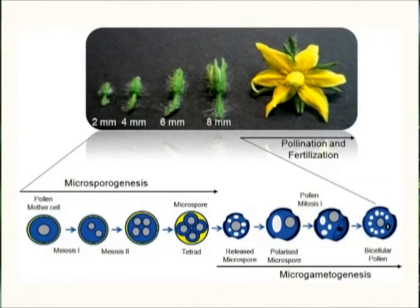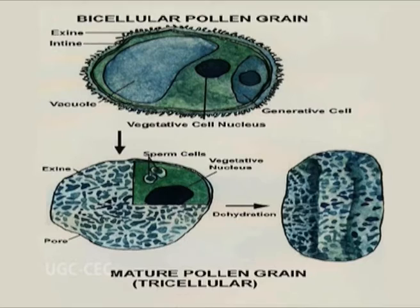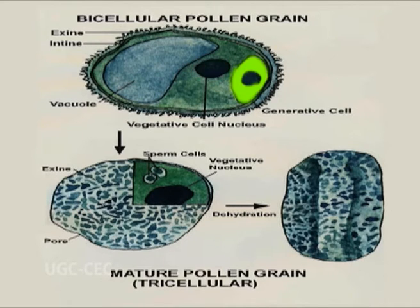Microgametogenesis comprises the events that lead to the development of male gametes within the microspores. This phase begins with the expansion of the microspore with the formation of a large vacuole. The vacuolation leads to displacement of the microspore nucleus to an eccentric position against the microspore wall, where the nucleus undergoes first mitosis, resulting in the formation of two unequal haploid cells: a large vegetative cell and a small generative cell.